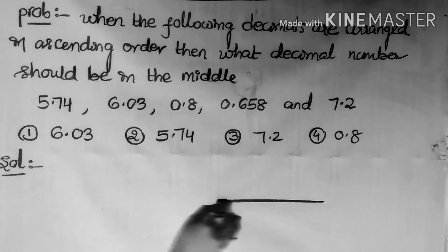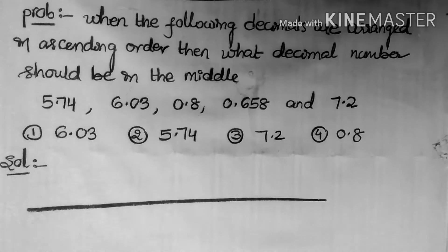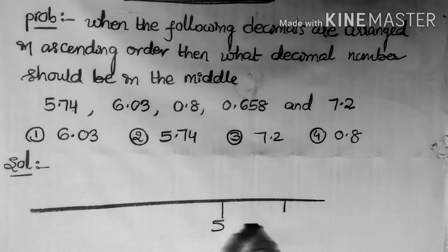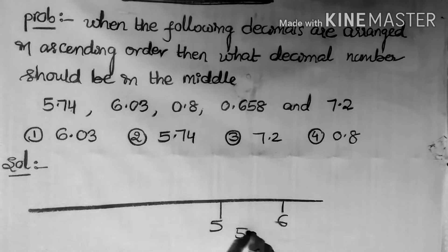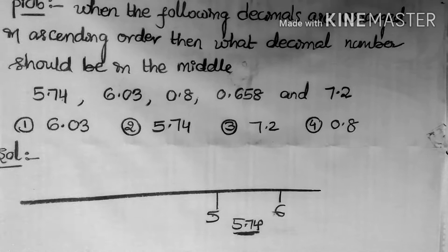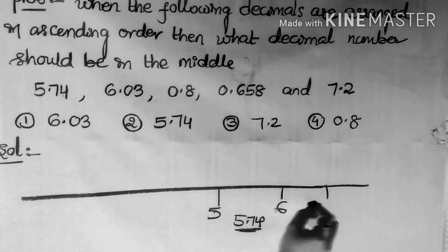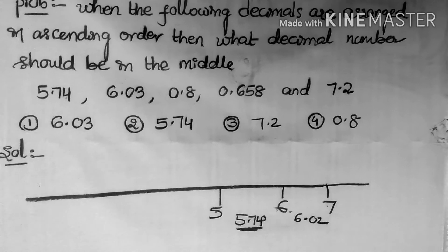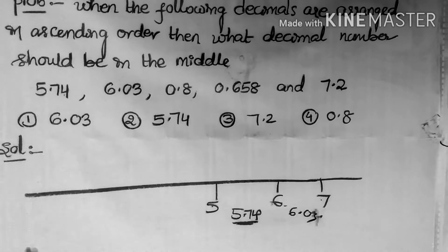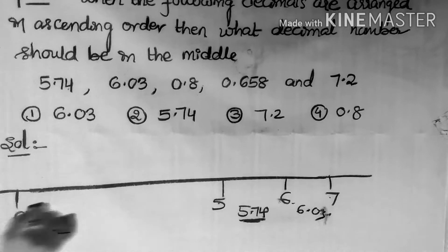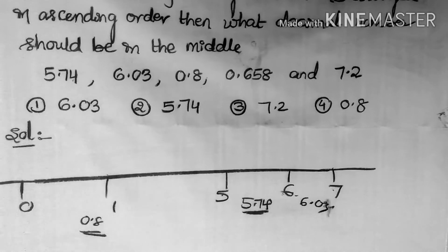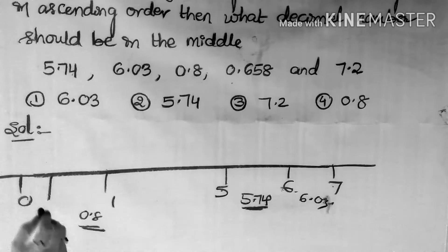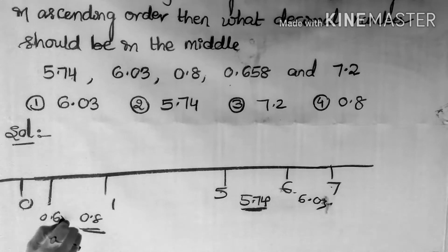First, I take a number line. The first number is 5.74, which lies between 5 and 6. Next, 6.03 lies between 6 and 7. Next, 0.8 lies between 0 and 1. And 0.658 also lies between 0 and 1.